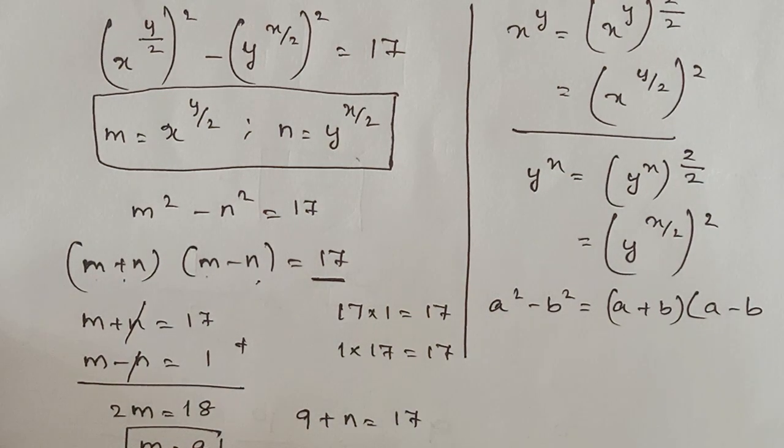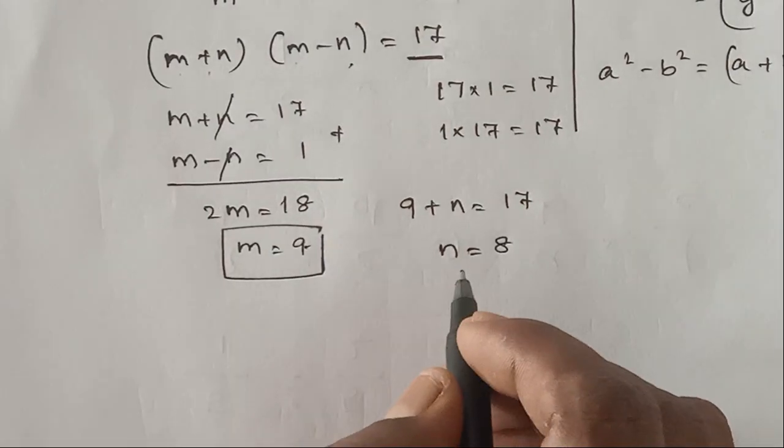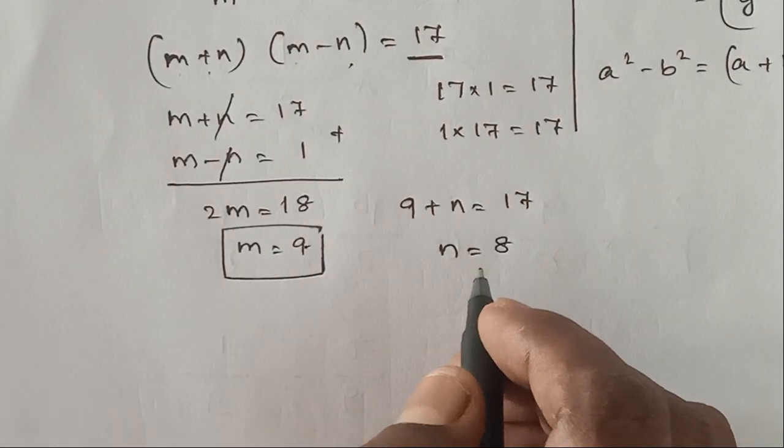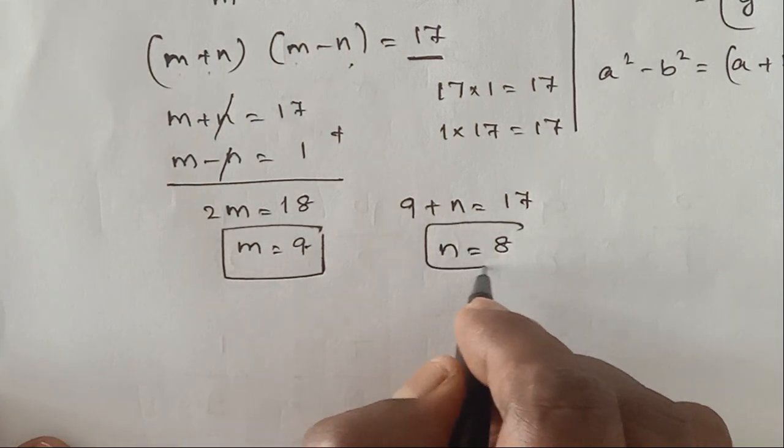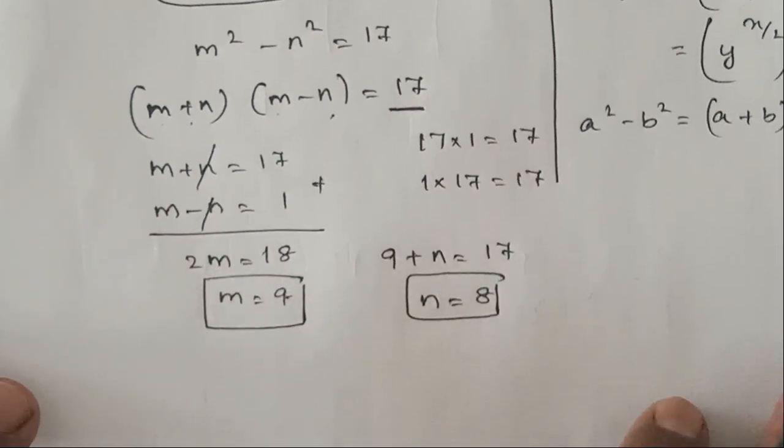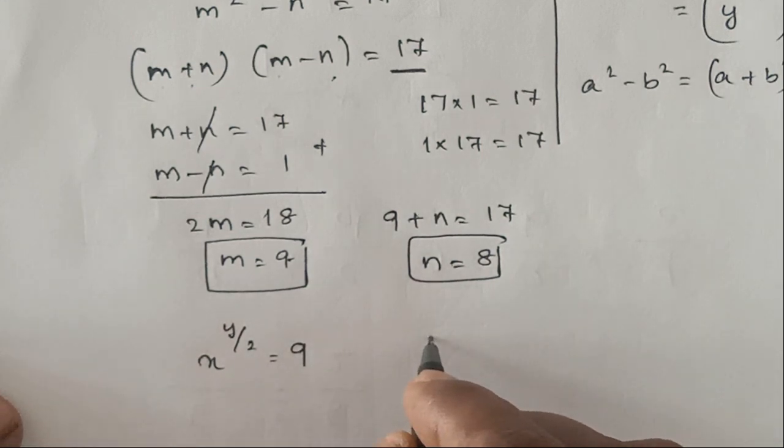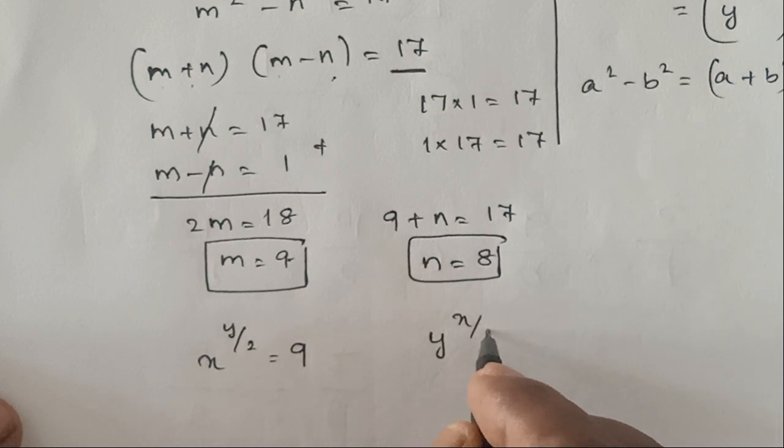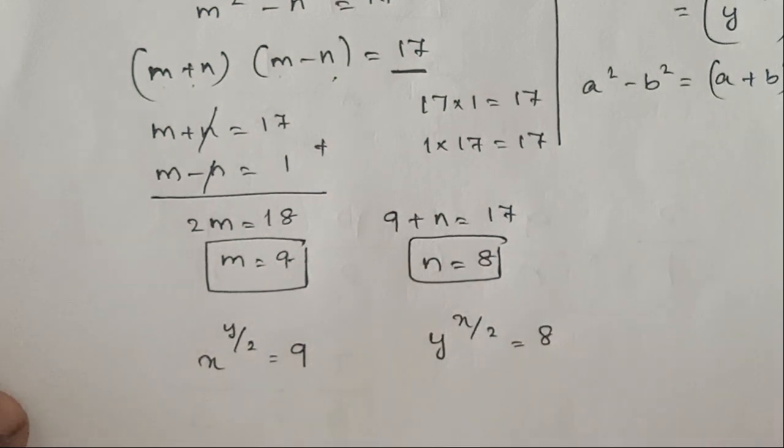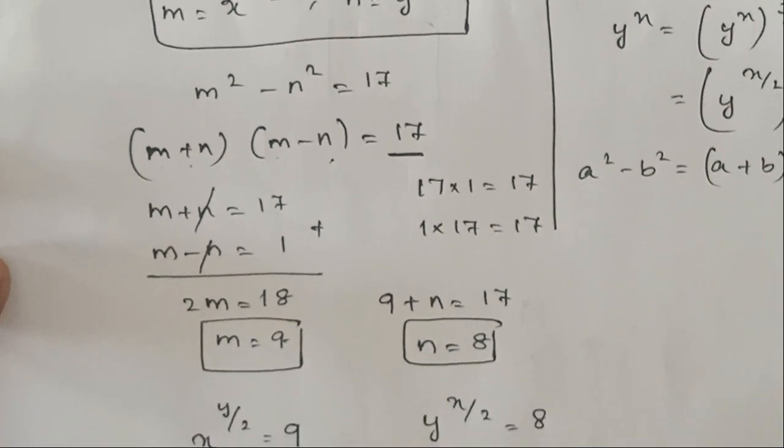So now, we apply this here. In the given first one, m is equal to x^(y/2). So we can say x^(y/2) is equal to 9, and y^(x/2) is equal to 8, because that is what we are saying. x^(y/2) is equal to m.